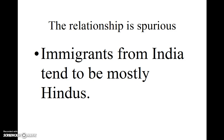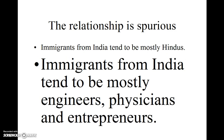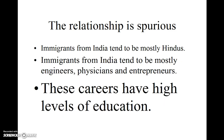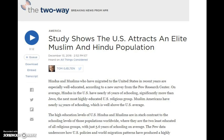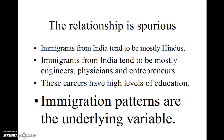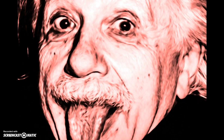Immigrants from India tend to be mostly Hindus. Immigrants from India also tend to be mostly engineers, physicians, and entrepreneurs — careers that have high levels of education. Studies show that immigrants attracted from India tend to have very high levels of education. So, immigration patterns are the underlying confounding variable behind this spurious correlation. By the way, the atheist portrayal of some individuals as atheists does not exactly square with the writings of those individuals.